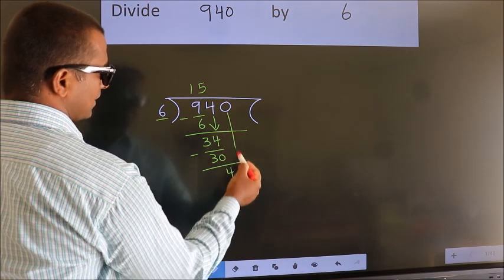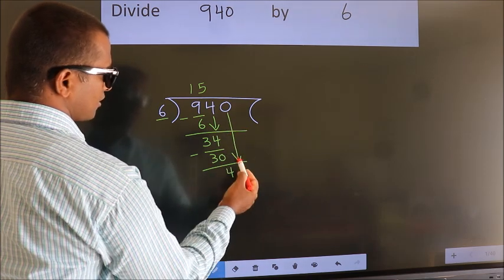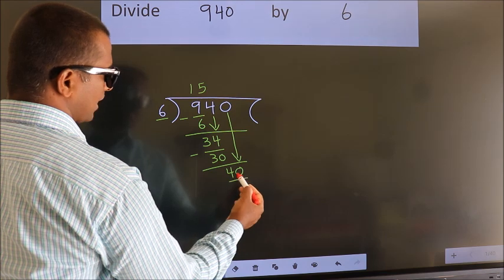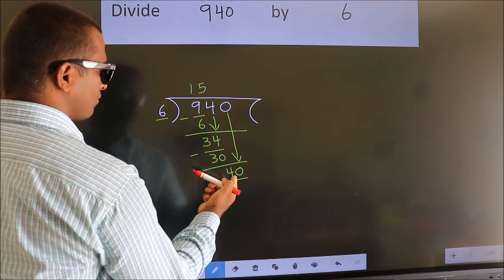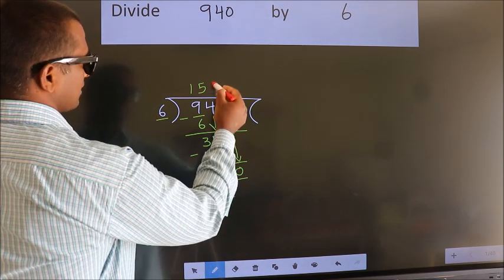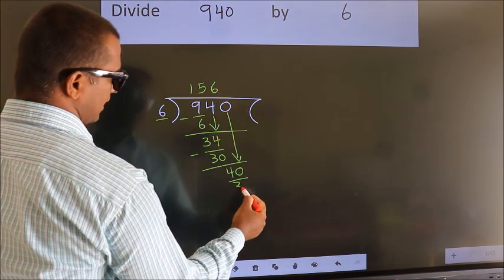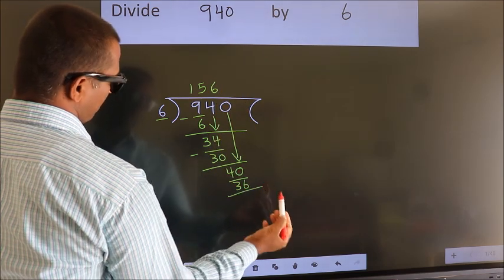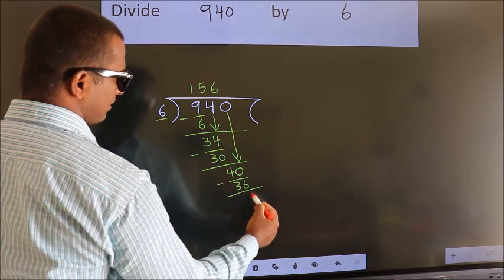After this, bring down the next number. So, 0 down. So, 40. A number close to 40 in 6 table is 6 times 6 is 36. Now we subtract. We get 4.